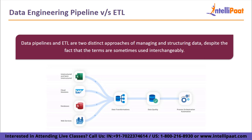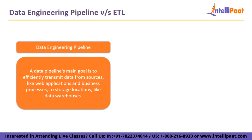A data pipeline's main goal is to efficiently transfer data from sources like web applications and business processes to storage locations like data warehouses. The data pipeline's job is finished even if no transformation is made to the data throughout this transfer operation. Additionally, the data loading stage does not always have to be the last in a data pipeline. Instead, a data pipeline can start new processes that can leverage the data included in the pipeline by triggering webhooks.